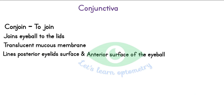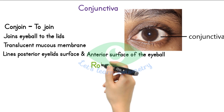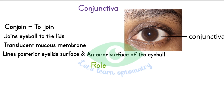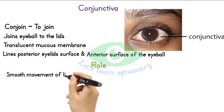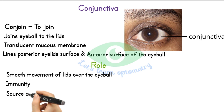Here, the white portion shown is the conjunctiva. As it is a translucent membrane, the underlying sclera is visible in white. The role of conjunctiva is to ensure smooth movement of the eyelids over the globe, it aids in immunity, and certain glands in the conjunctiva help in producing the tear film layers.